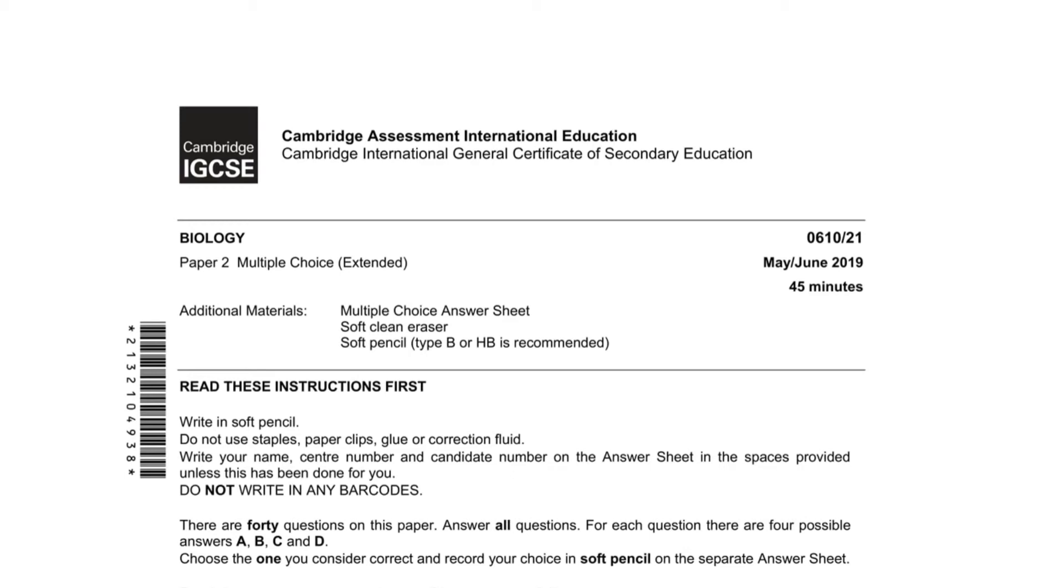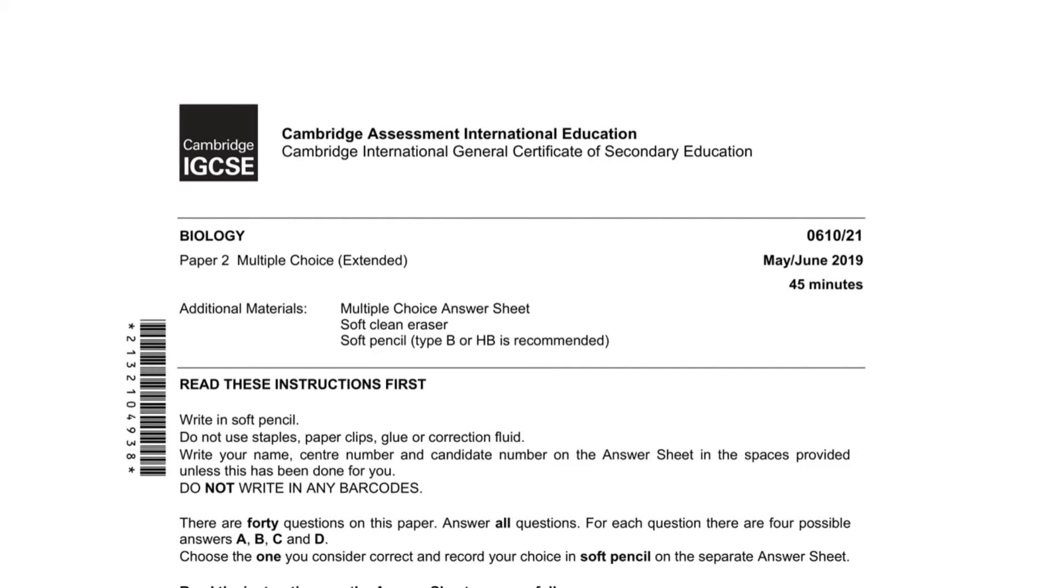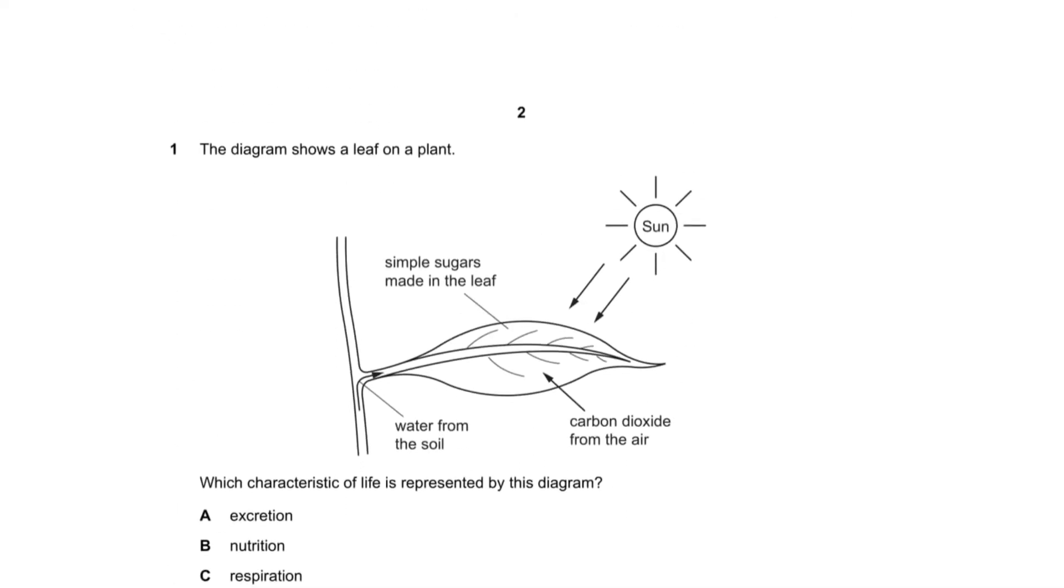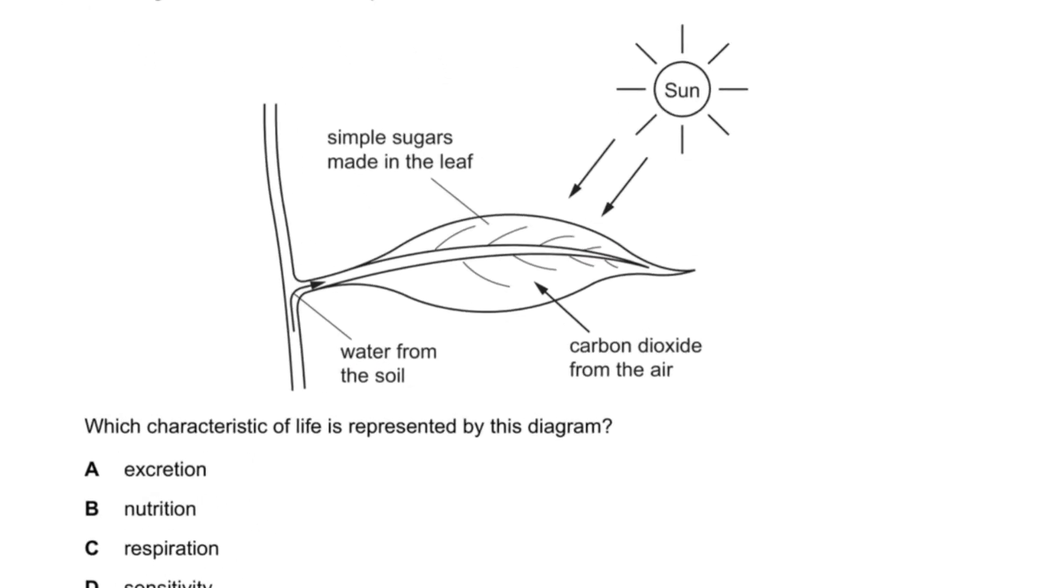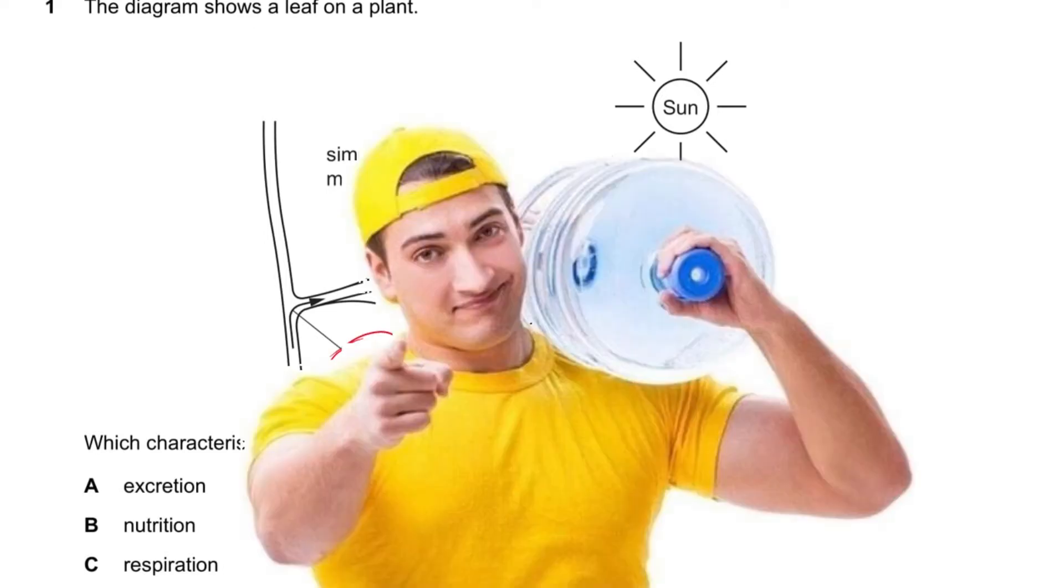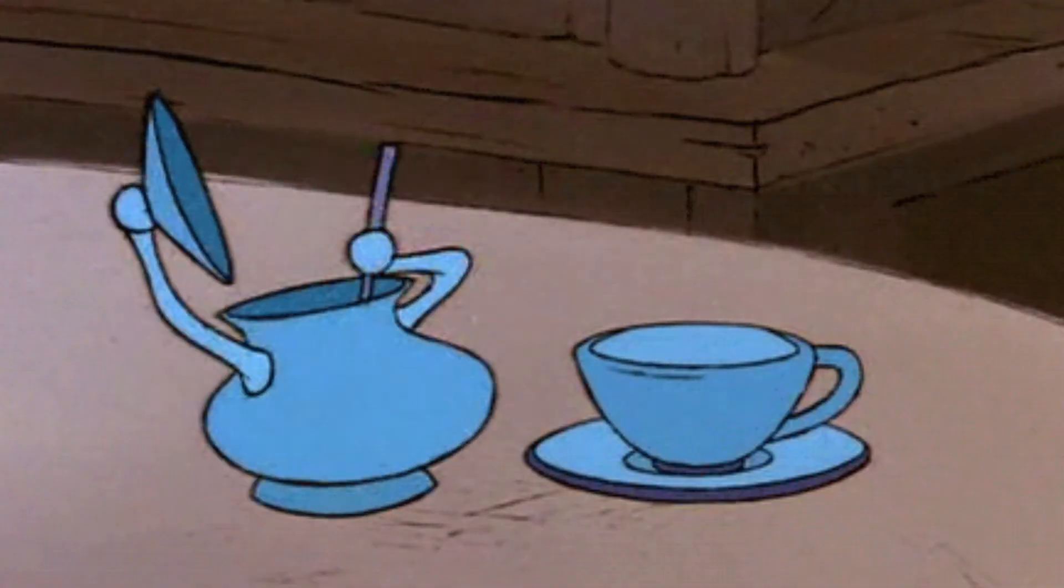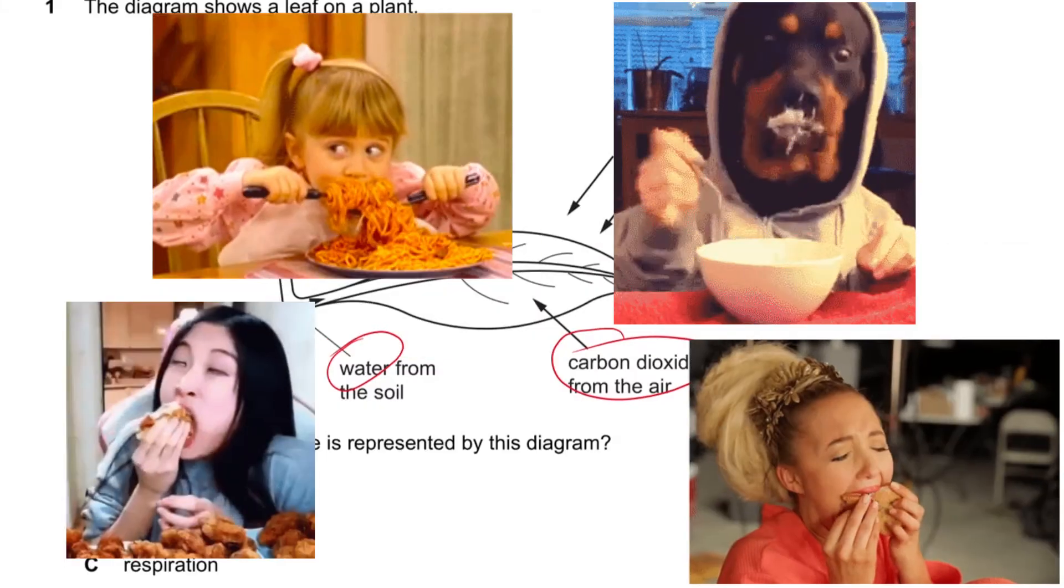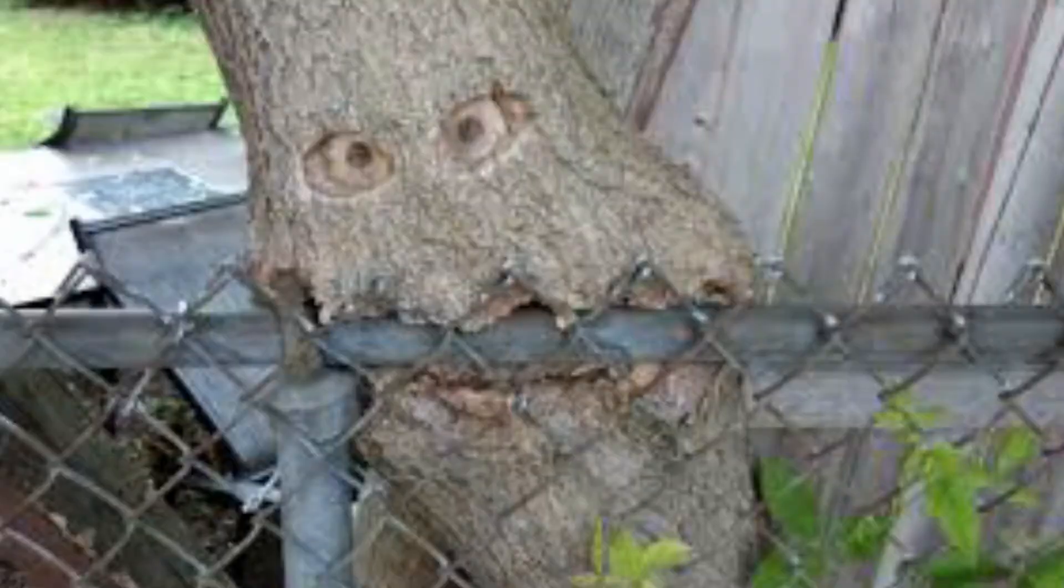Hey guys, welcome back to my channel. In today's video we'll be solving biology paper 2, 2019 May/June variant 1. Question number one says the diagram shows a leaf on a plant. Which characteristic of life is represented by this diagram? If you look at the diagram we can see that it's taken in water and carbon dioxide to make sugar, so it's basically photosynthesizing, which is eating for plants. So nutrition.